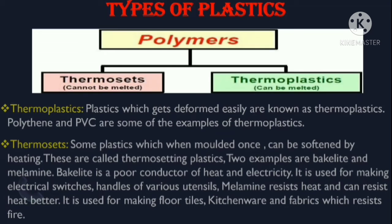Now let's see what thermosets are. Some plastics, when molded once, cannot be softened by heating again. These are called thermosetting plastics. Two examples are Bakelite and melamine. Bakelite is a poor conductor of heat and electricity and is used for making electrical switches and handles of various utensils — poor conductor means it is an insulator.